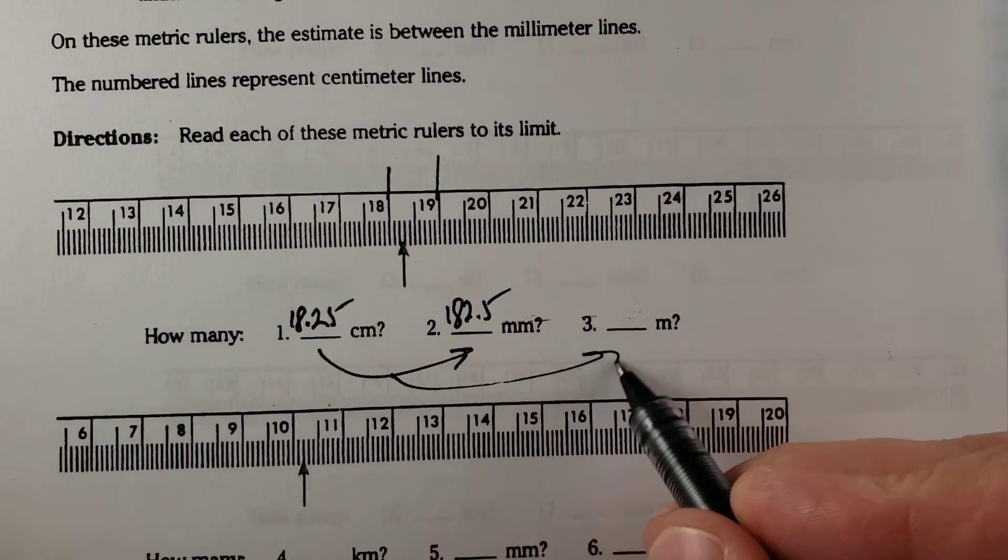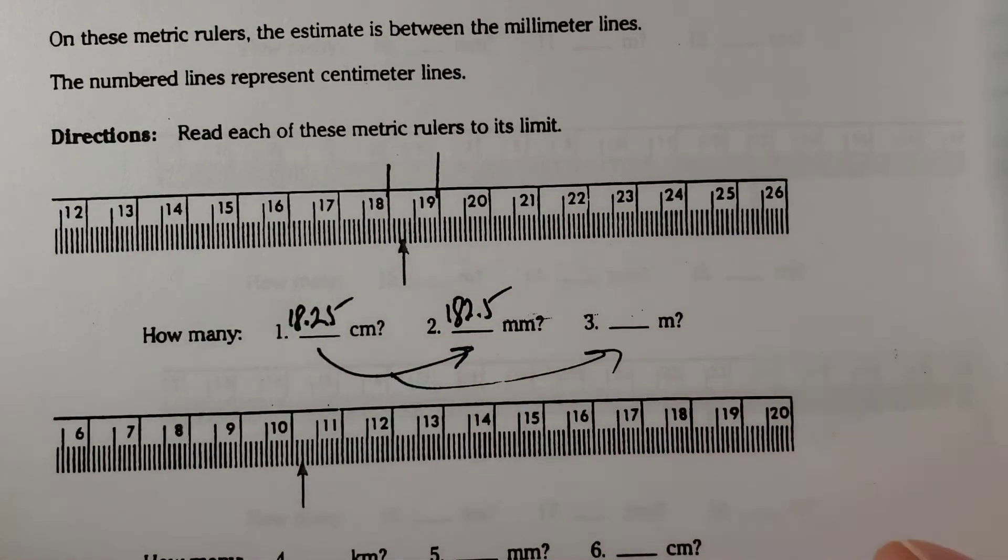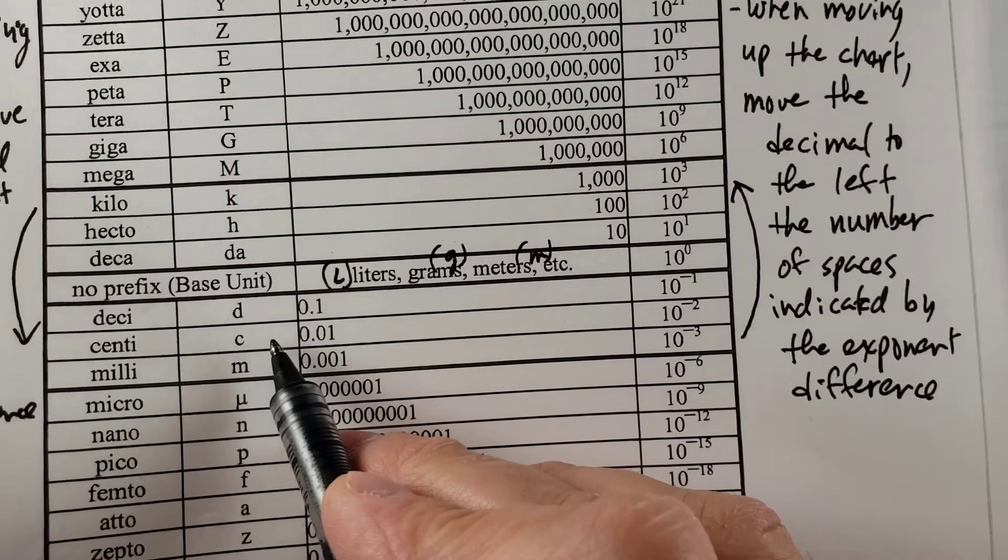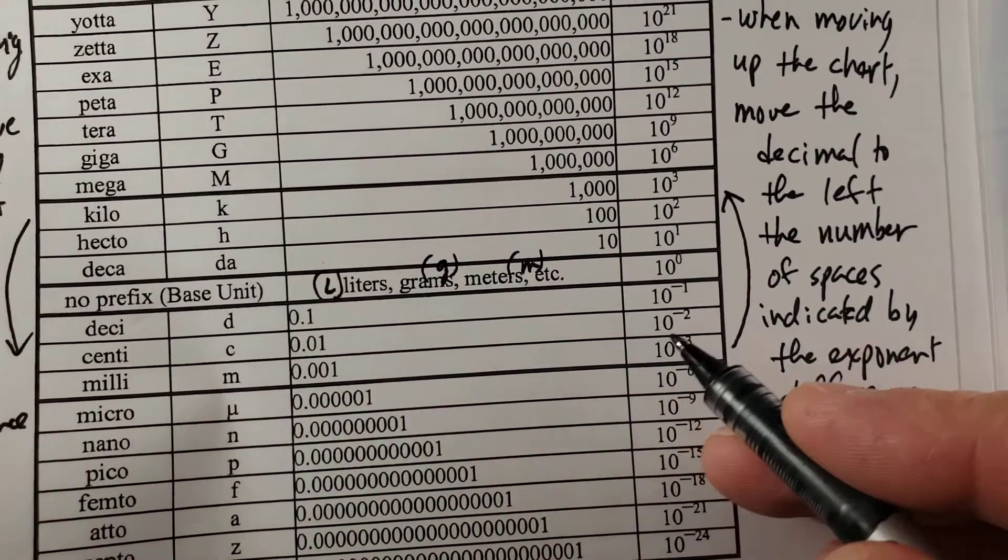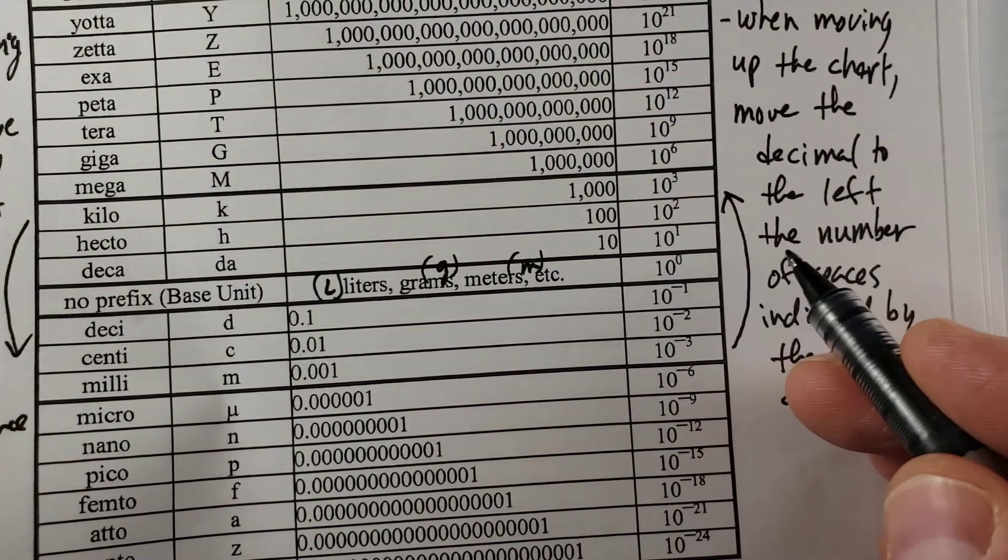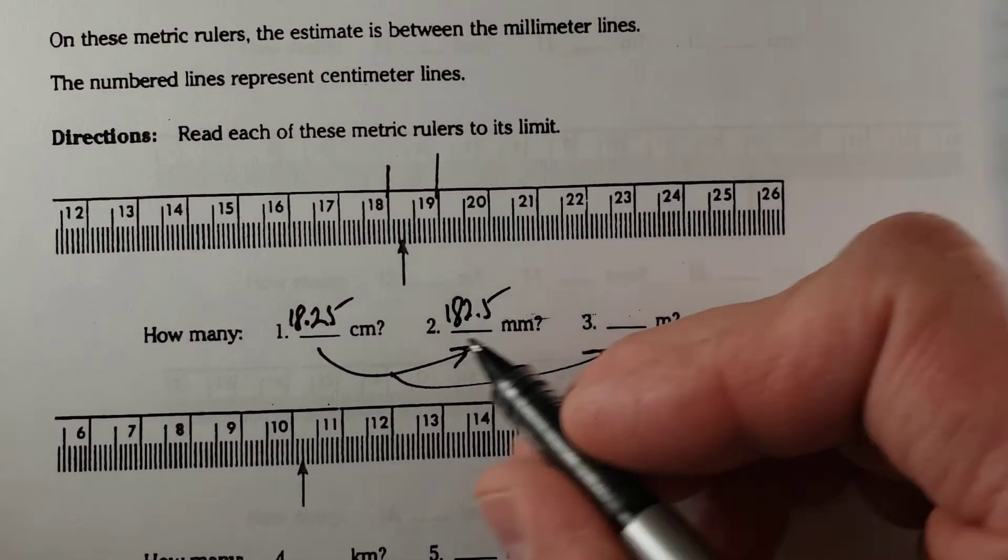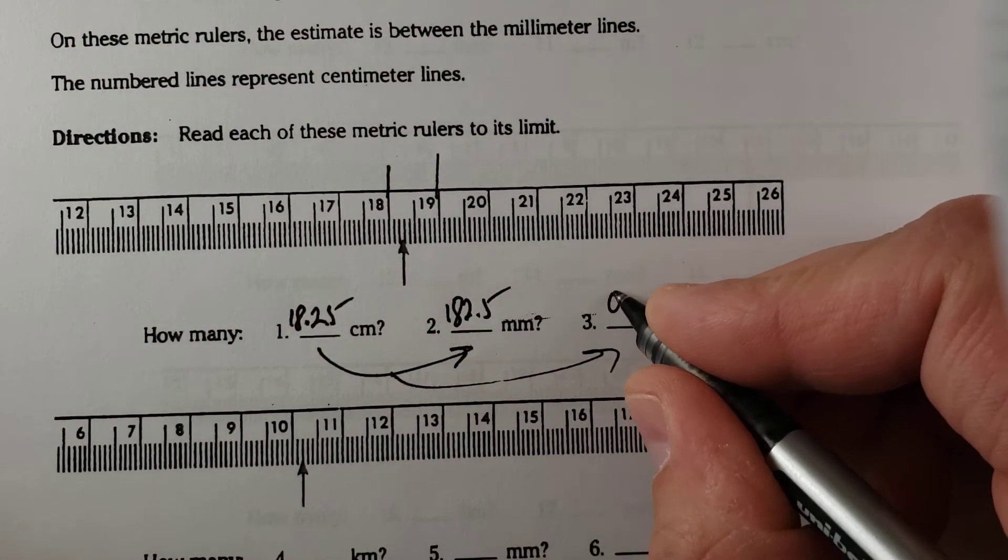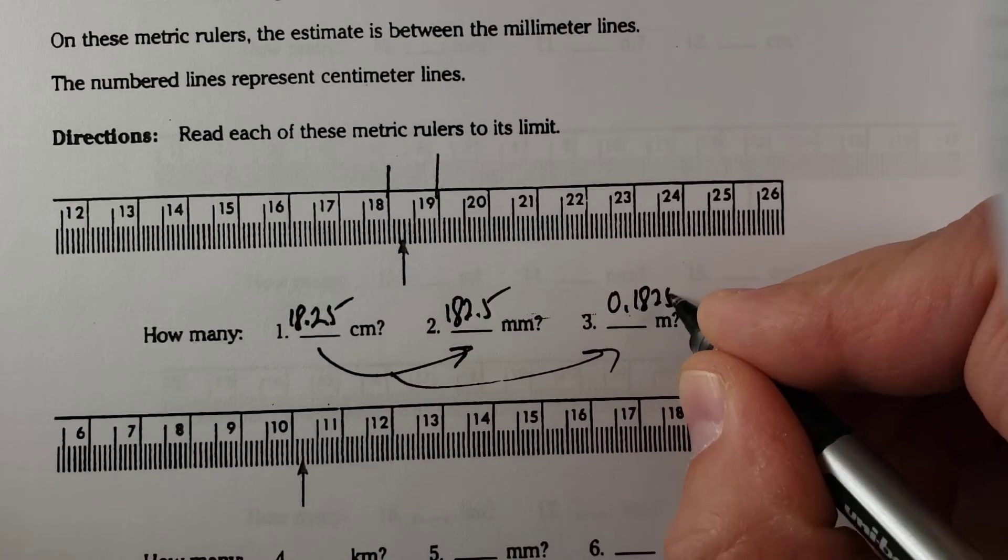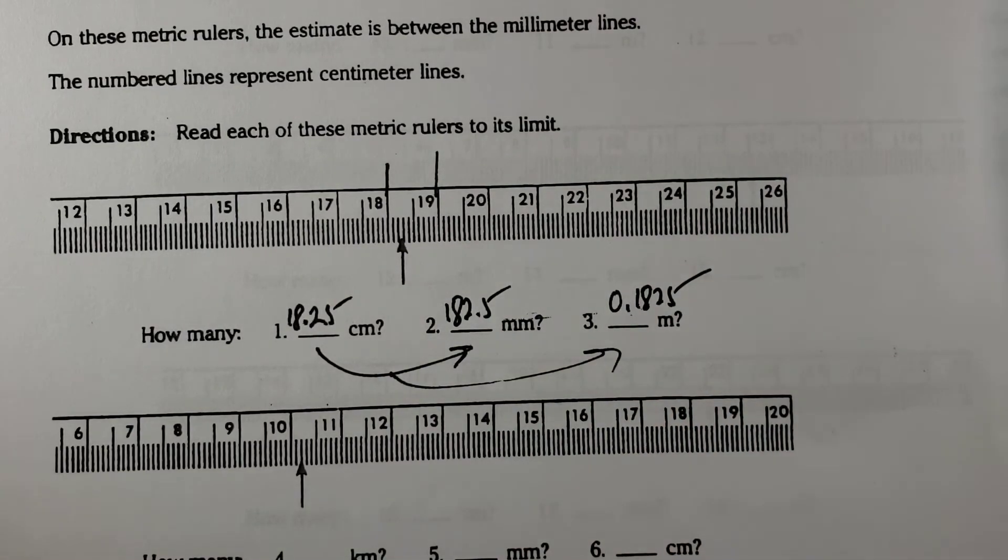And we're going from centimeters to meters. Centimeters to meters, one, two. Moving up the chart by two. So the decimal goes to the left by two. So 18.25 becomes 0.1825 meters.